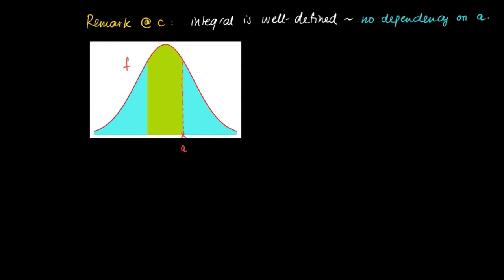Suppose we have, instead of a, we choose a different number, a star. And suppose that in this definition the integral from minus infinity to a star exists. So basically it says that area 1 has a specific size, area 2 has a specific size, and also area 3 has a specific size. And suppose that the integral from minus infinity to a star, f(x) dx exists, and the integral from a star to infinity, f(x) dx, also exists. So then we could take a star in the definition of the integral from minus infinity to infinity.